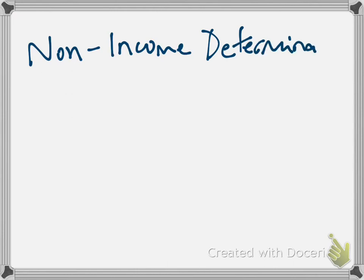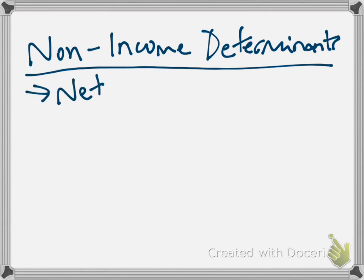We call these non-income determinants. Your textbook does a good job of listing these out and talking through them. It's things like household net wealth. So if the value of your assets goes up, even though your income hasn't changed, you spend more money. If real estate crashes, the value of your assets declines, you spend less money even if your income is the same.